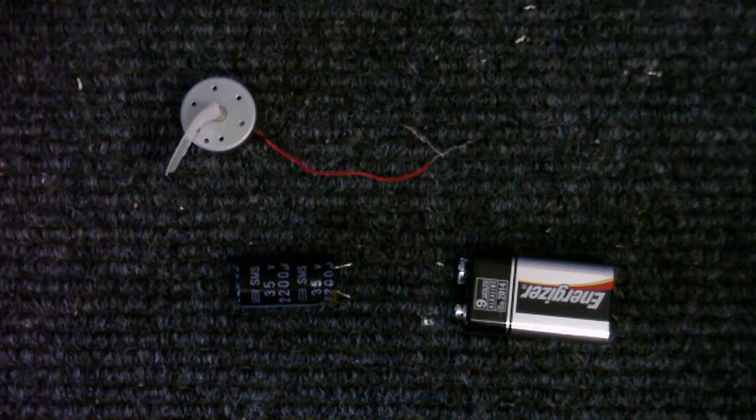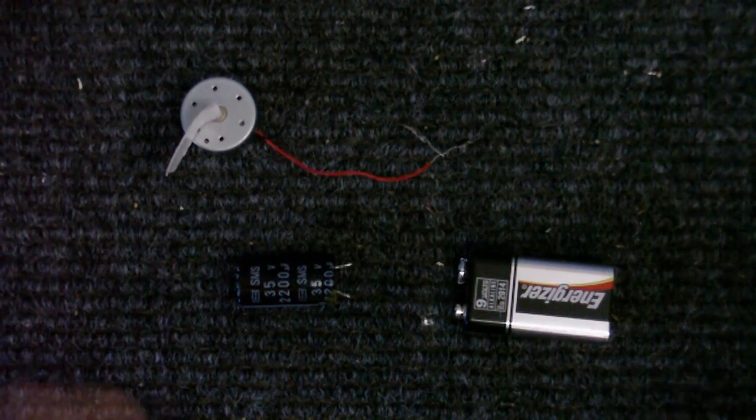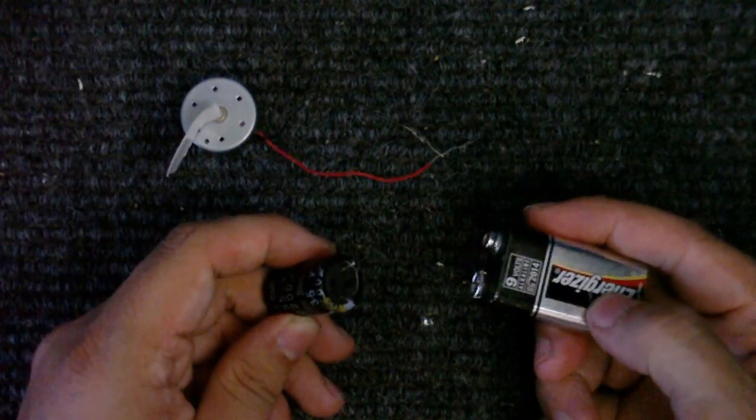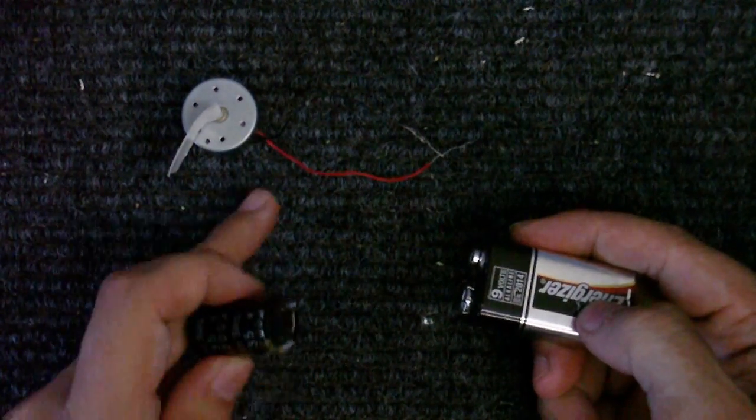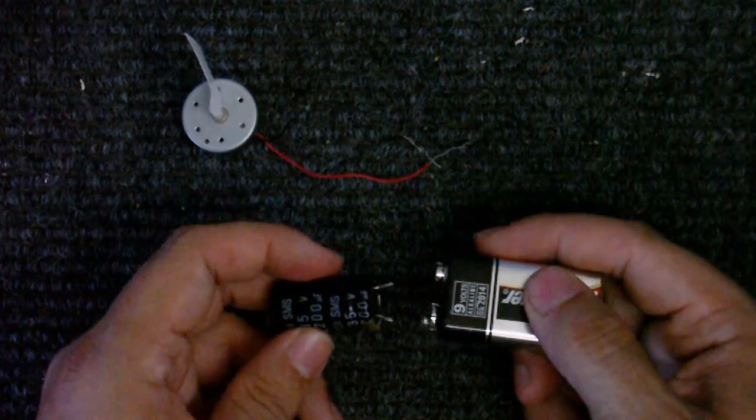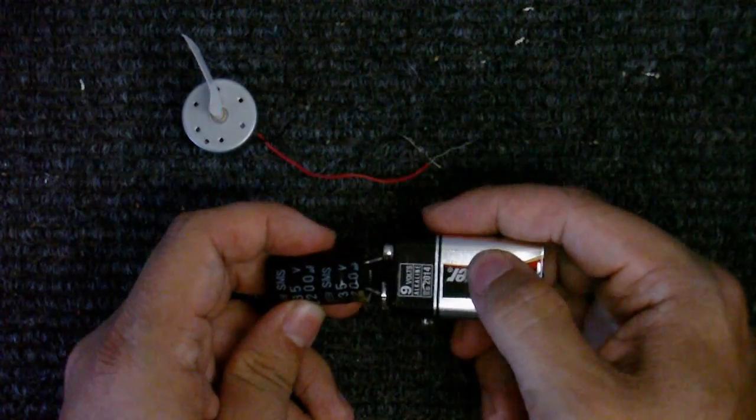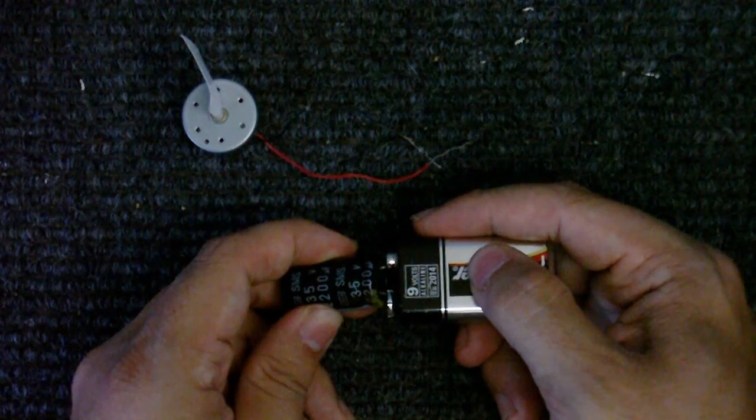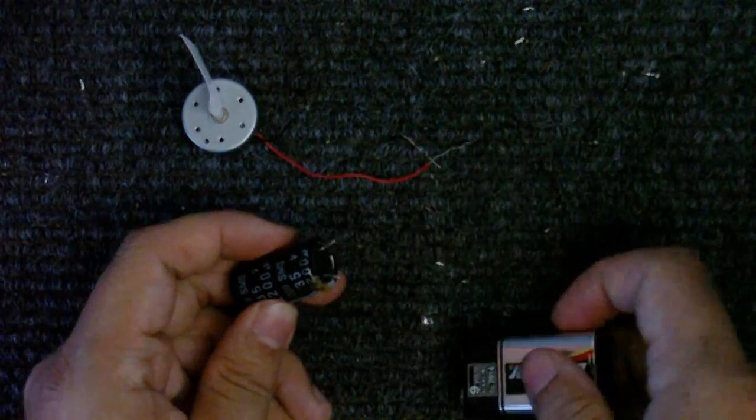Now, first up, I'm going to show you an example of how a capacitor stores an electrical charge. So, what I've got here is an ordinary battery, an ordinary capacitor, an ordinary motor with a bit of tape stuck on it so you can see if it's turning. So, firstly, I'll charge the capacitor with the battery. Okay, that should be enough.